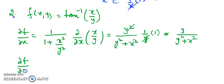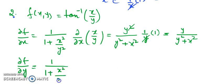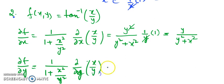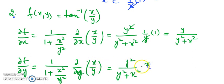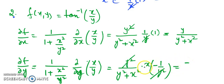Similarly, when differentiating with respect to y: the tan⁻¹ formula gives 1/(1 + x²/y²), and then partial differentiation with respect to y of x/y. After taking LCM, we get y² + x². This y² goes to the numerator. Here x is constant and differentiation of 1/y is −1/y², so y² cancels, leaving a minus sign. The result is −x / (x² + y²). Whether you write y² + x² or x² + y² in the denominator hardly matters.